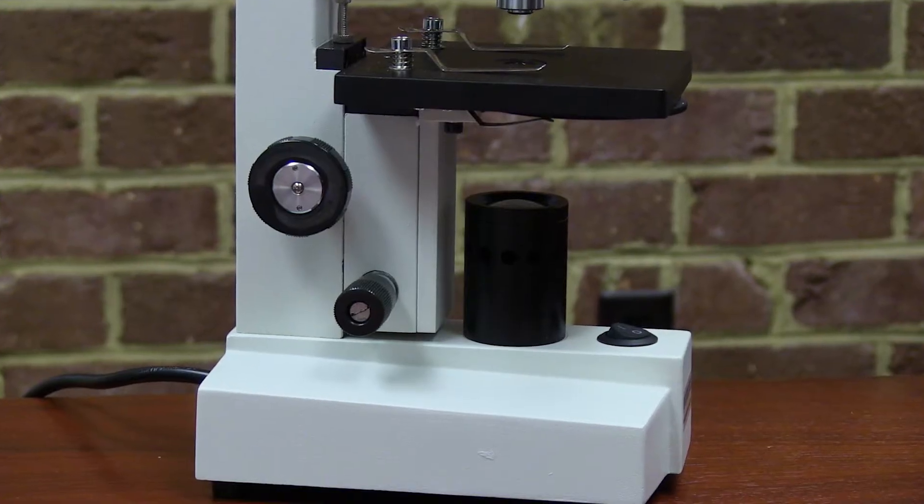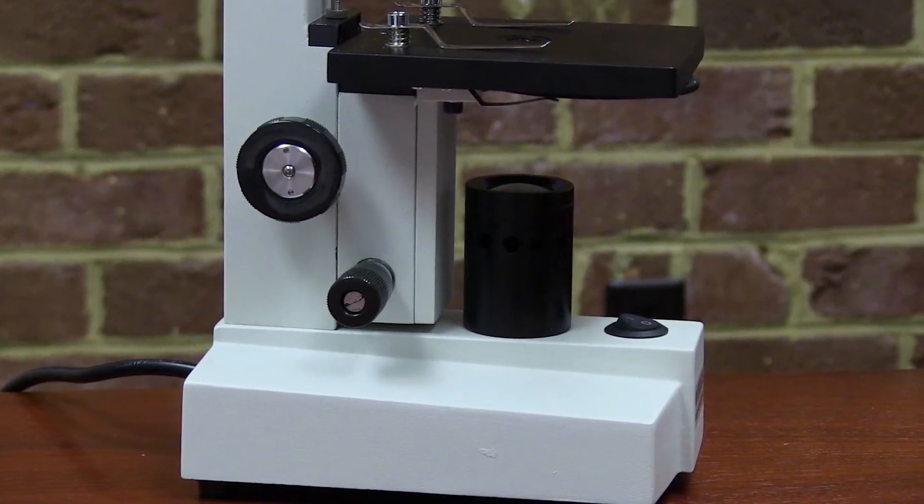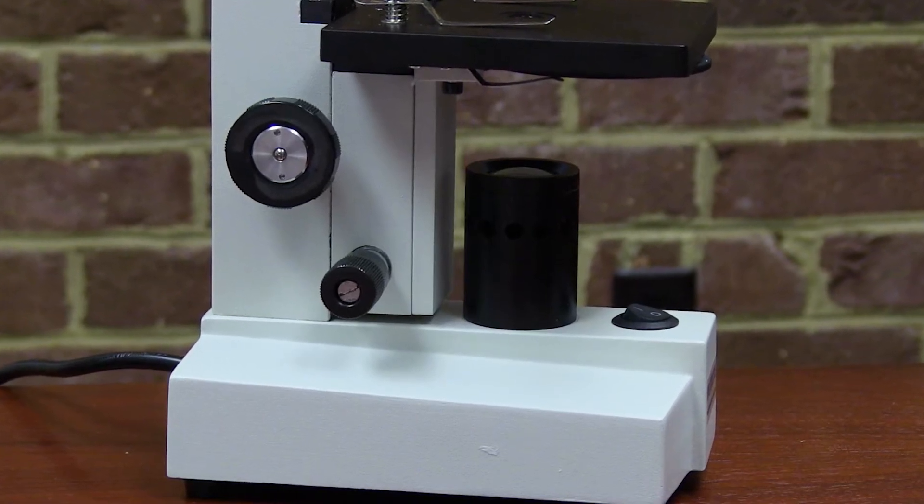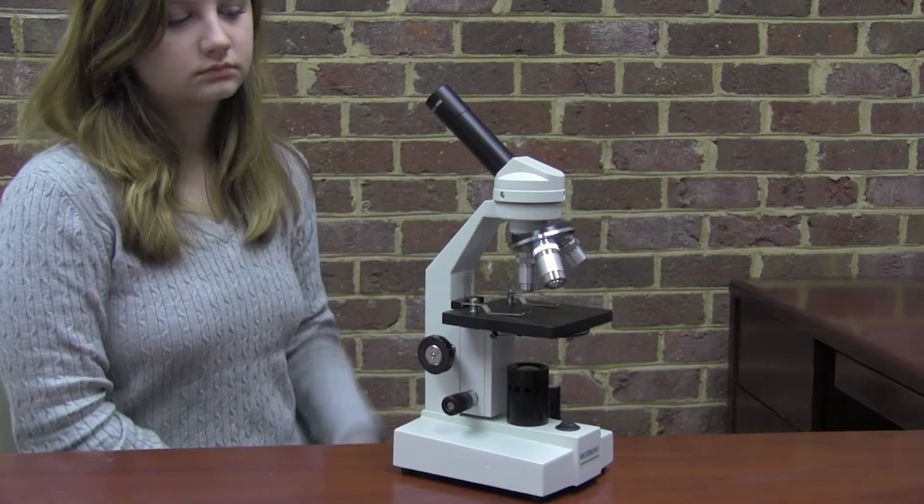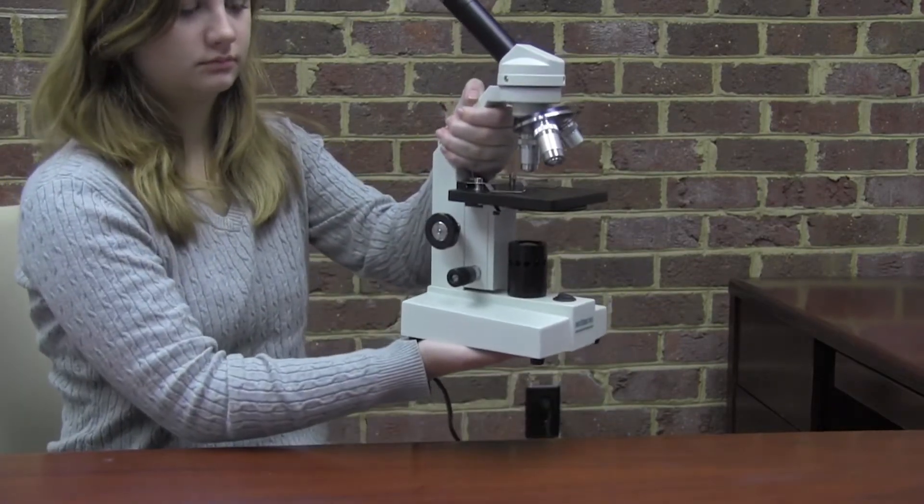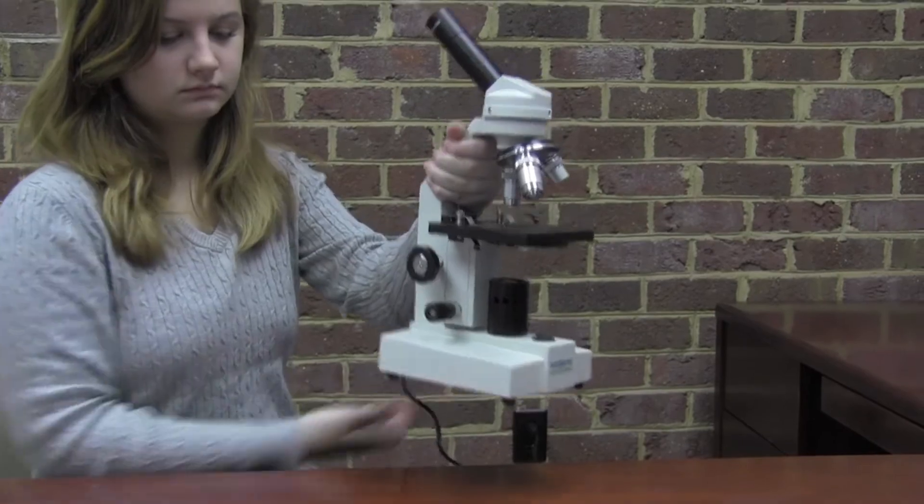The bottom of the microscope is called the base. Always place the microscope base on a firm, steady, flat surface. Whenever the microscope is moved or carried, it should always be held by the arm and the base, like this.